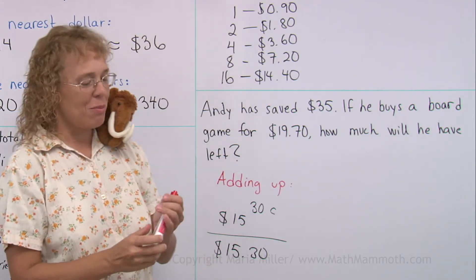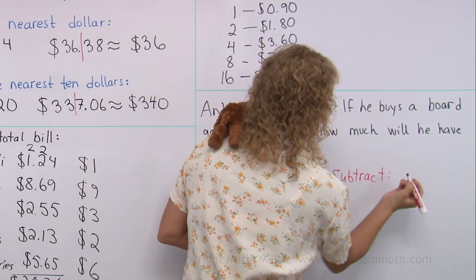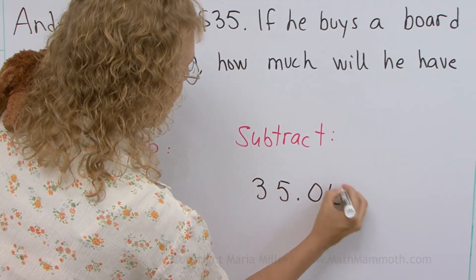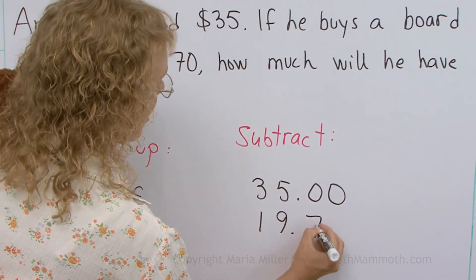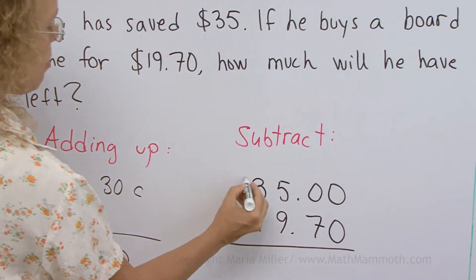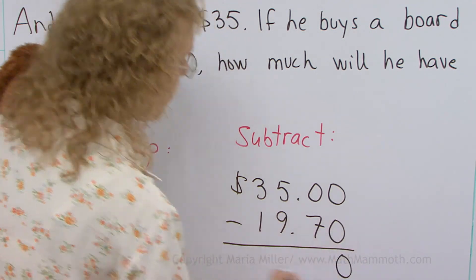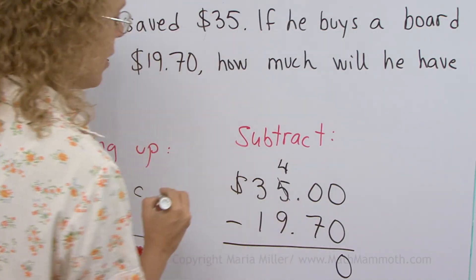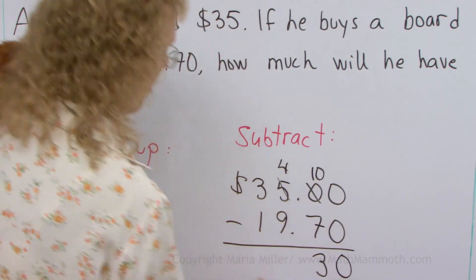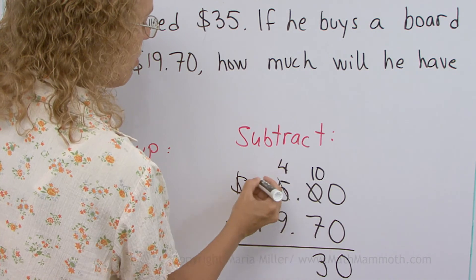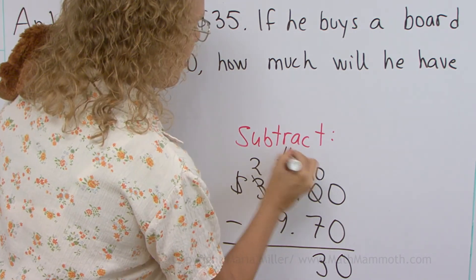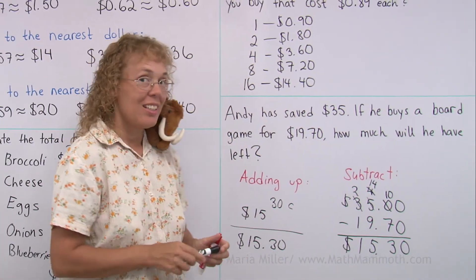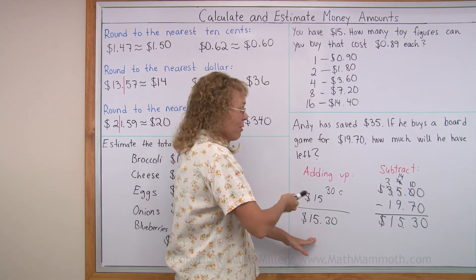Now I also want to show you the subtraction method, and then you can decide which is easier. In subtraction we have $35.00 minus $19.70. Zero minus zero is easy. Then 0 minus 7 — you can't do it, so you regroup: leave 4 there and 10 here. Ten minus 7 is 3. Then 4 minus 9 — regroup again: leave 2 here, giving 14. Fourteen minus 9 is 5. Then 2 minus 1 is 1. So we get the same result: $15.30. Personally, I think the adding up method with mental math is actually easier.